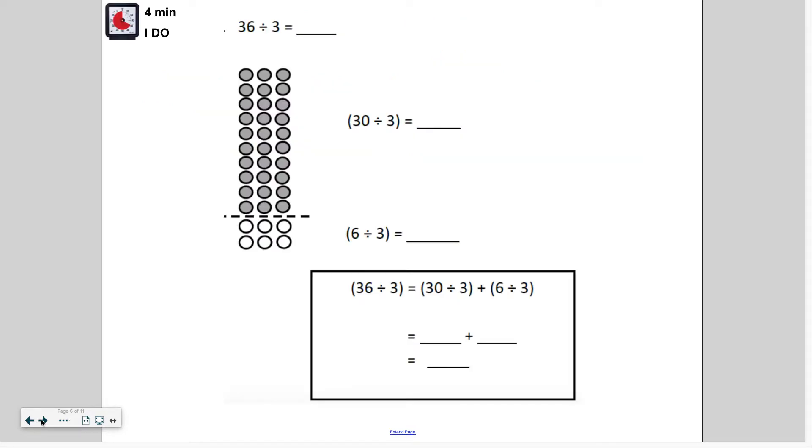So let's get started. Usually we've been seeing the distributive property used to decompose one of the factors that we're multiplying to make it easier to multiply. In this case we're gonna do the opposite. We're going to be decomposing the dividend, meaning the number that we're going to be dividing.